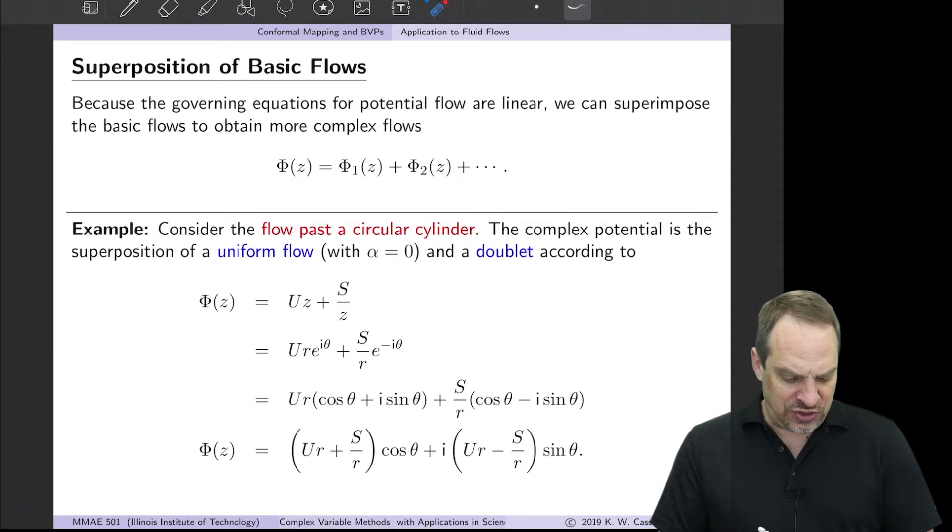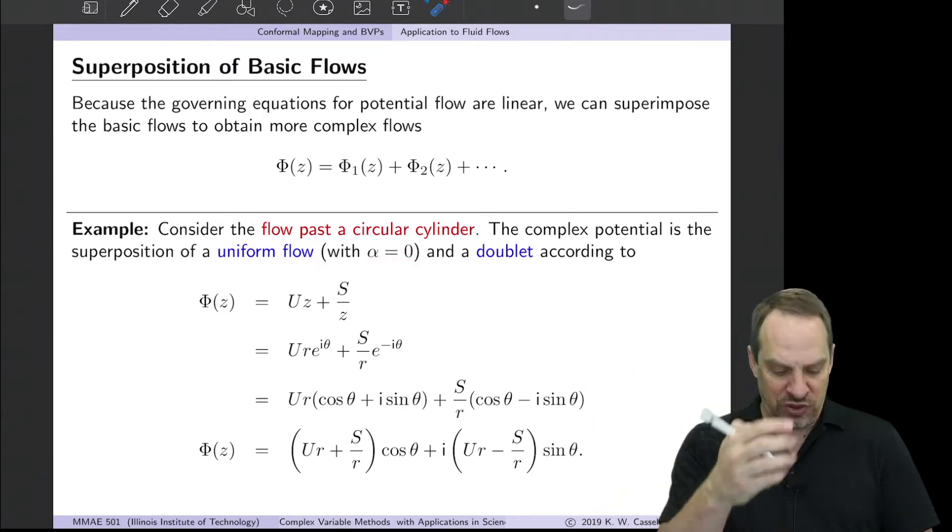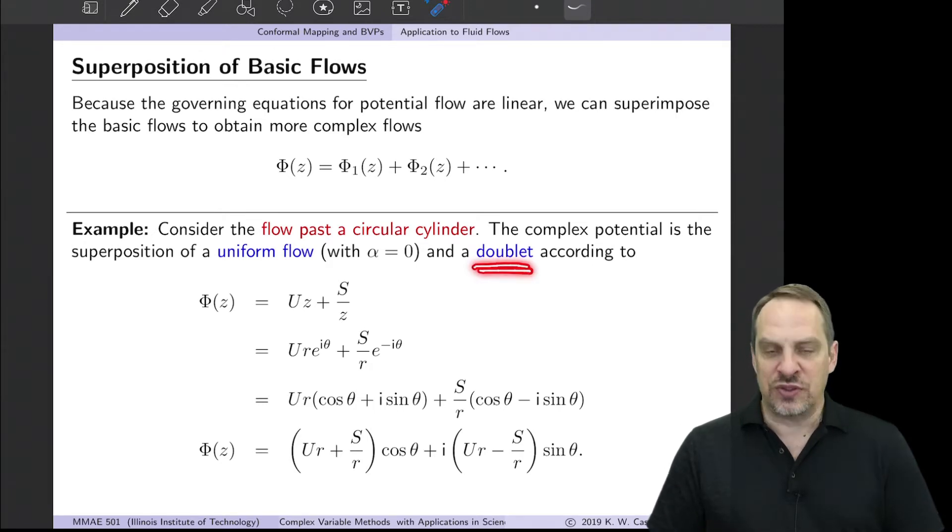The way you get flow around a circular cylinder is you superimpose a uniform flow, where in this case alpha equals zero, so it's just a parallel, horizontal, uniform flow, and a doublet. The doublet plus the uniform flow gives us the flow around a circular cylinder. Here's the complex potential function Φ: the uniform flow with alpha equals zero, that's Uz, plus the doublet S/z.